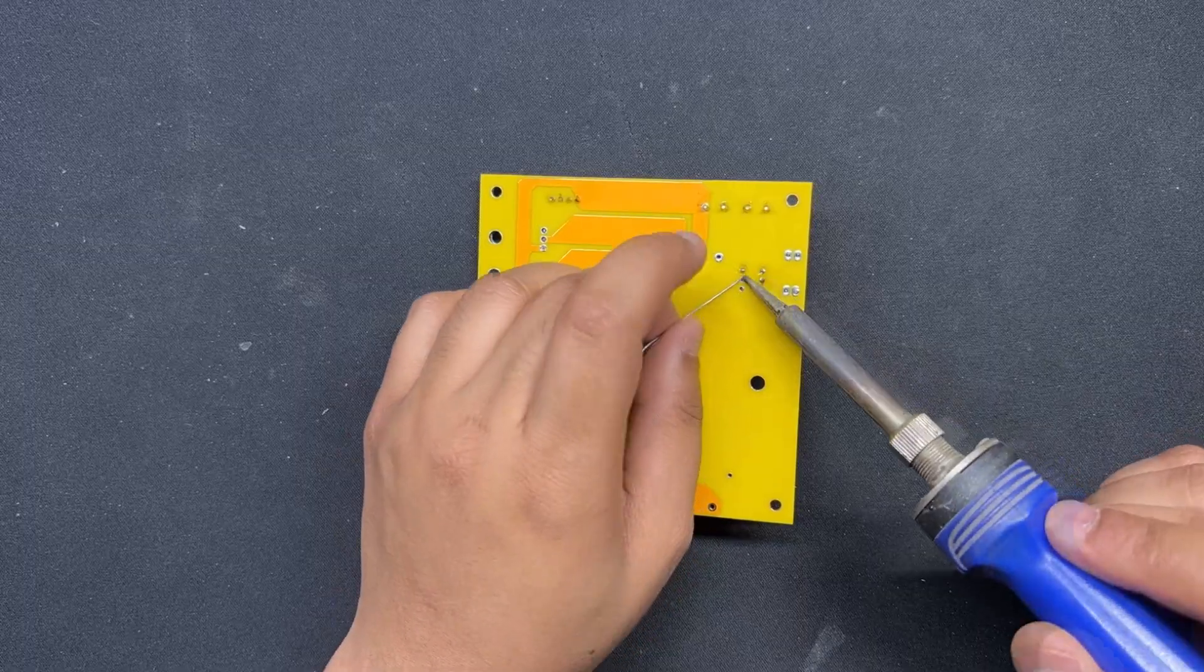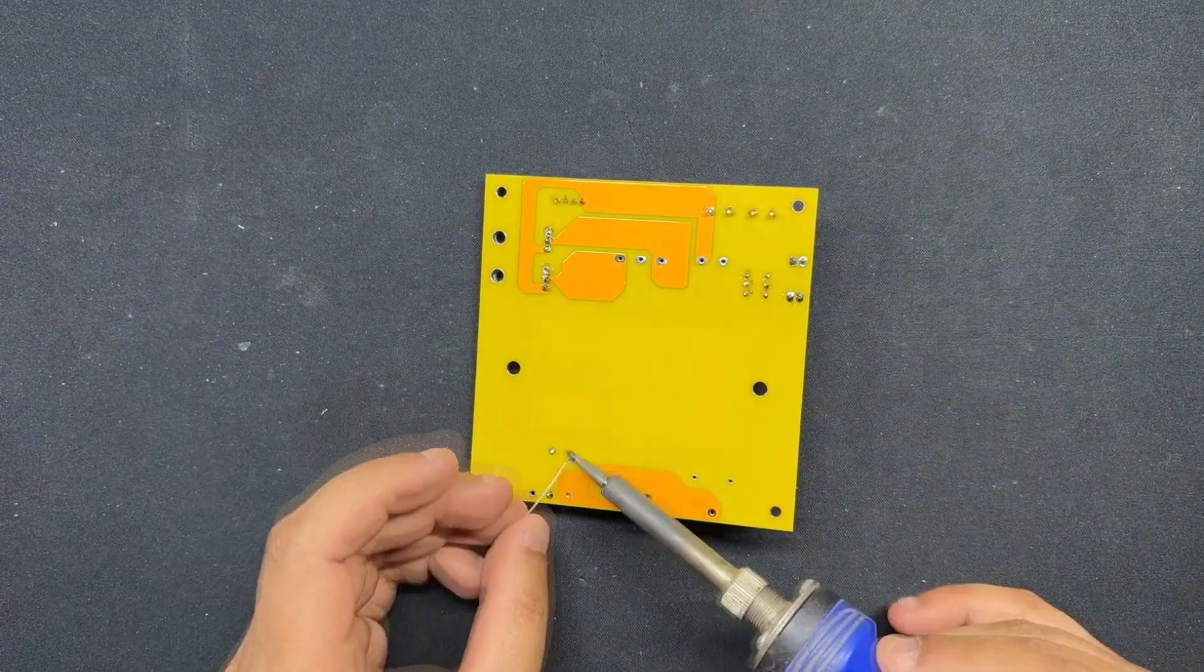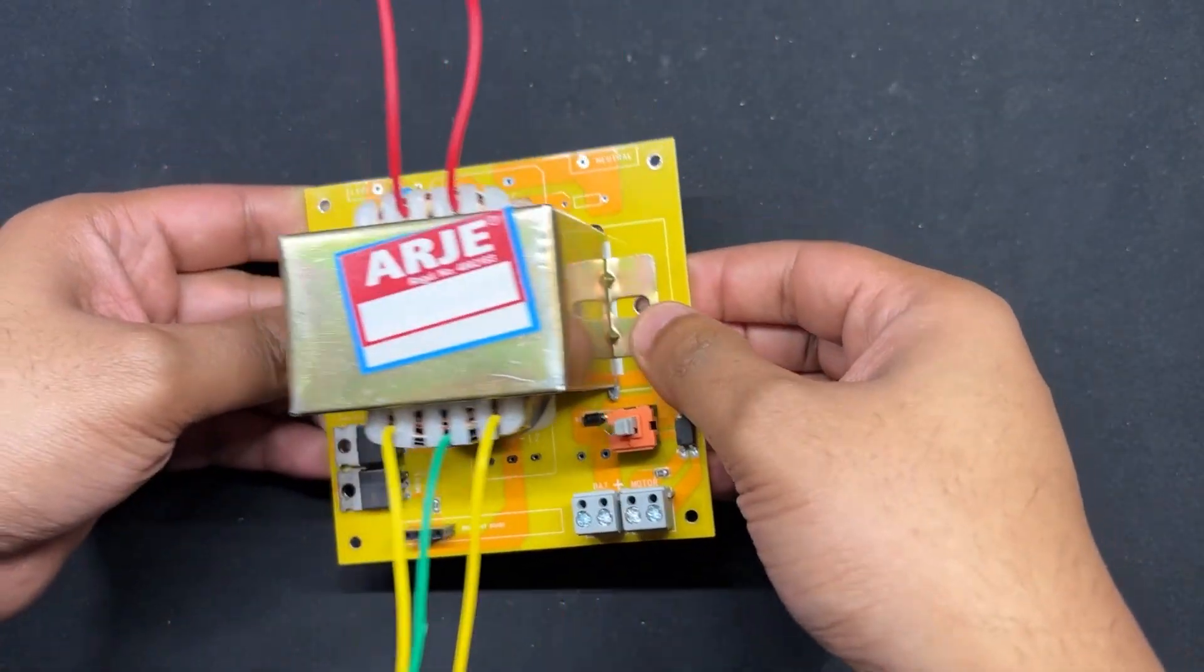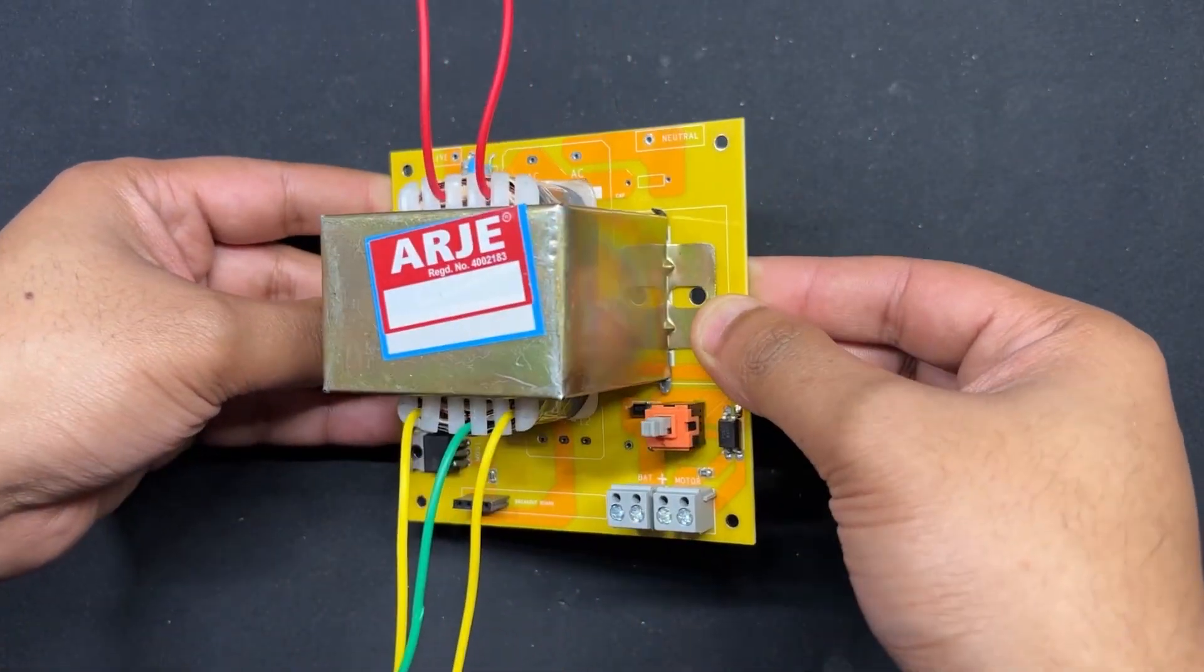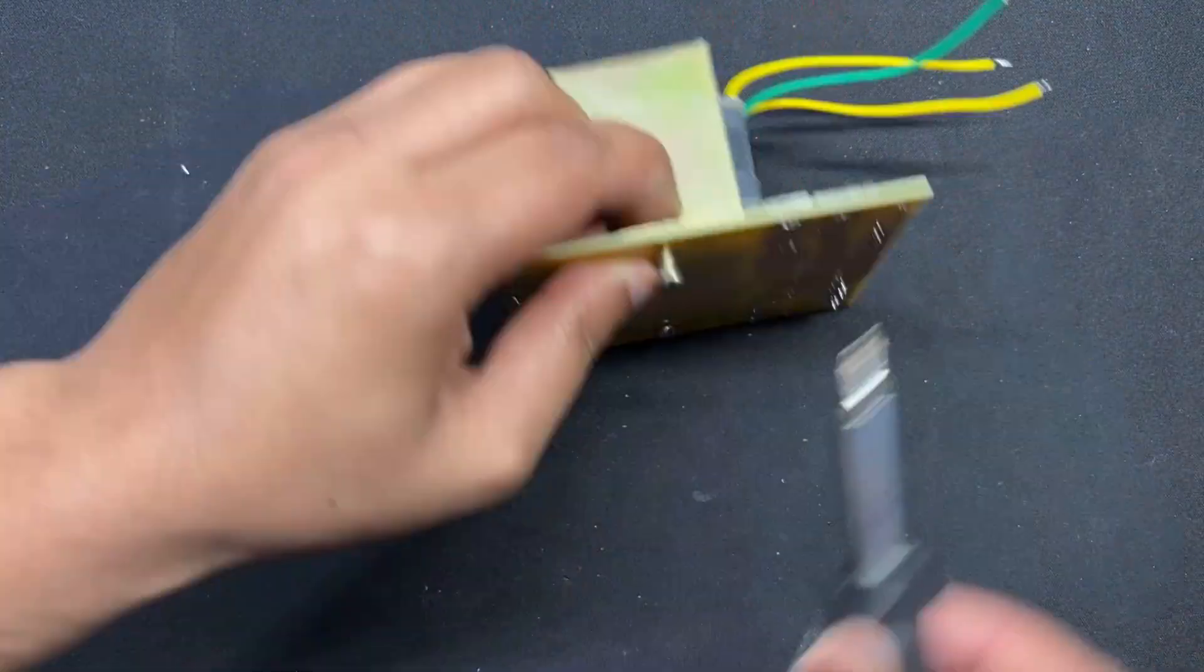Next, we flip the board over and solder all of the THT components with the soldering iron. Now we add transformer to the circuit, which we start by placing the transformer over the circuit and then use two M2.5 nuts and bolts to fasten it with the PCB.